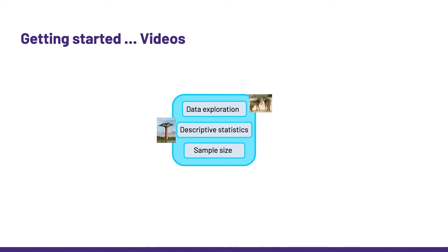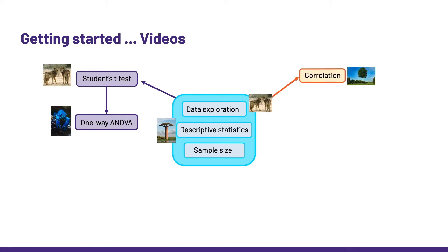So let's say we want to know if there is a difference between two groups of values. We can go for the t-test or the one-way ANOVA if we have more than two groups. On the other hand, if we want to know if there is an association between two quantitative variables, we can go for a correlation.